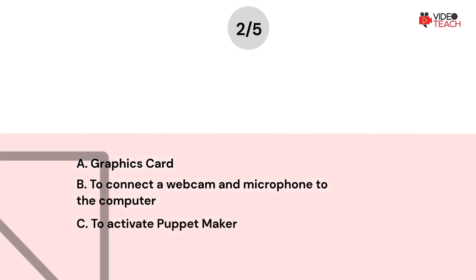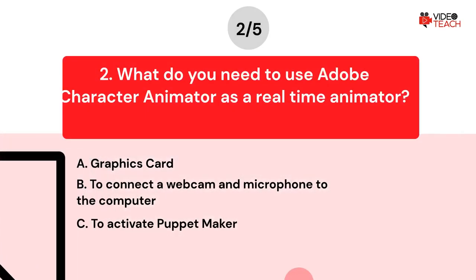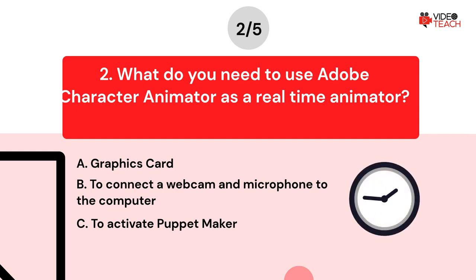Question number two. What do you need to use Adobe Character Animator as a real-time animator? Option A: A graphics card. Option B: Connect a webcam and microphone to the computer. Option C: Activate Puppet Maker. Now you have about 15 seconds to think about your answer.